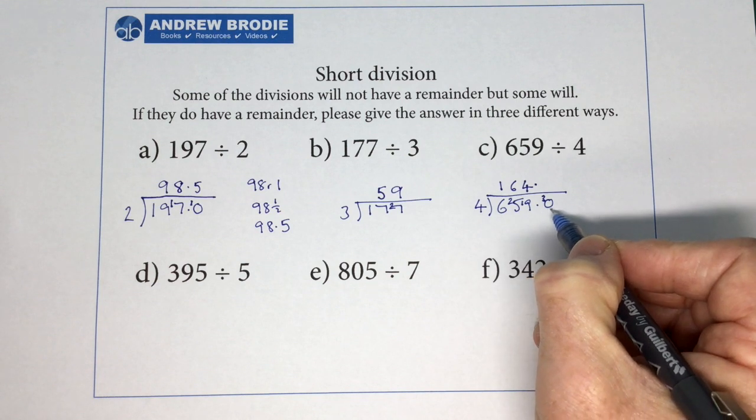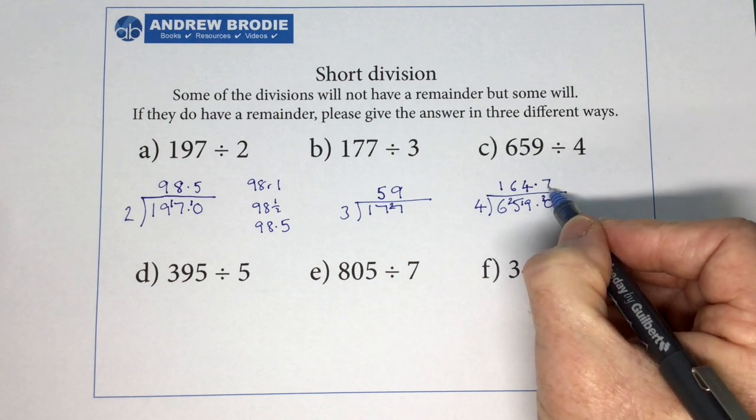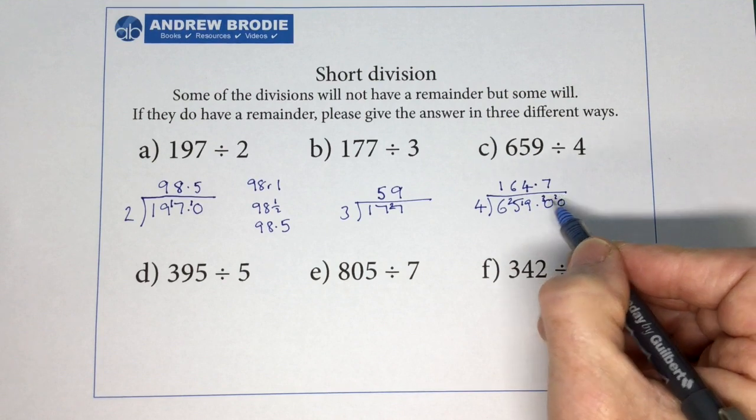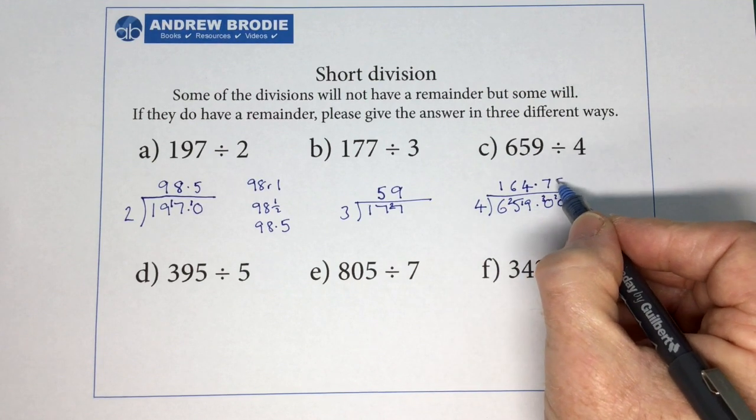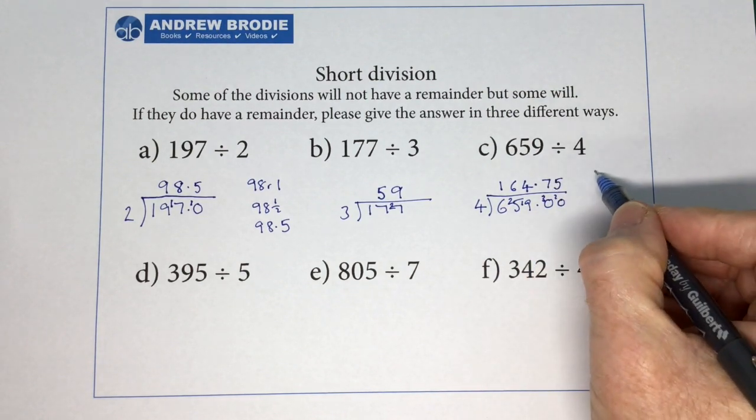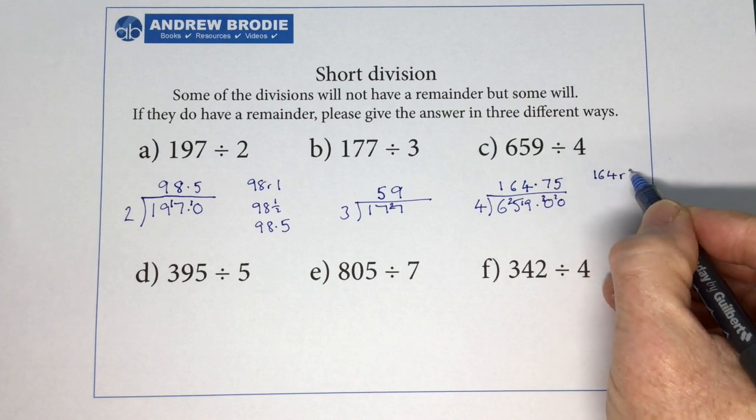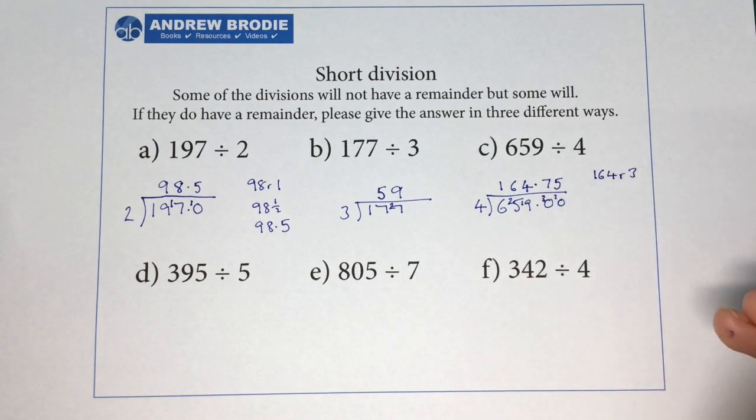So we can put the 3 there. 4 into 30 goes 7 times with 2 left over. 4 into 20 goes 5 times. So we can see we could have had the answer 164 remainder 3. That 3 was left over.